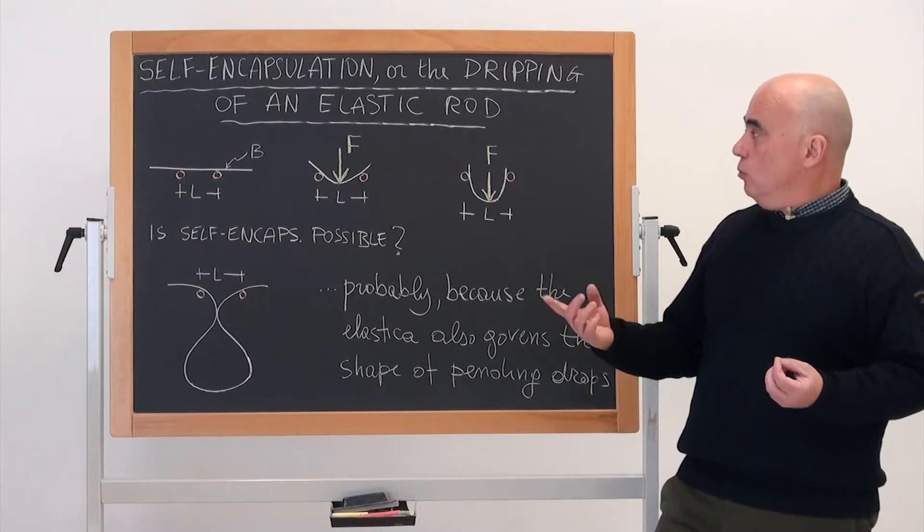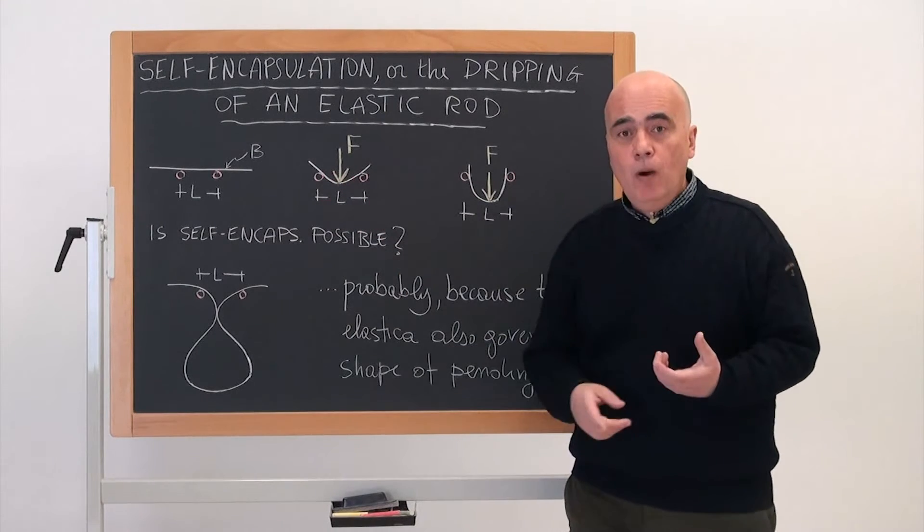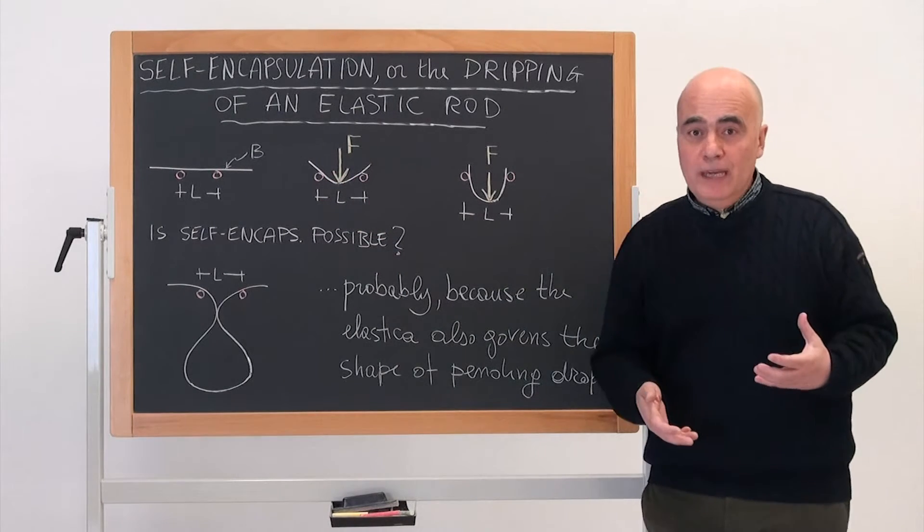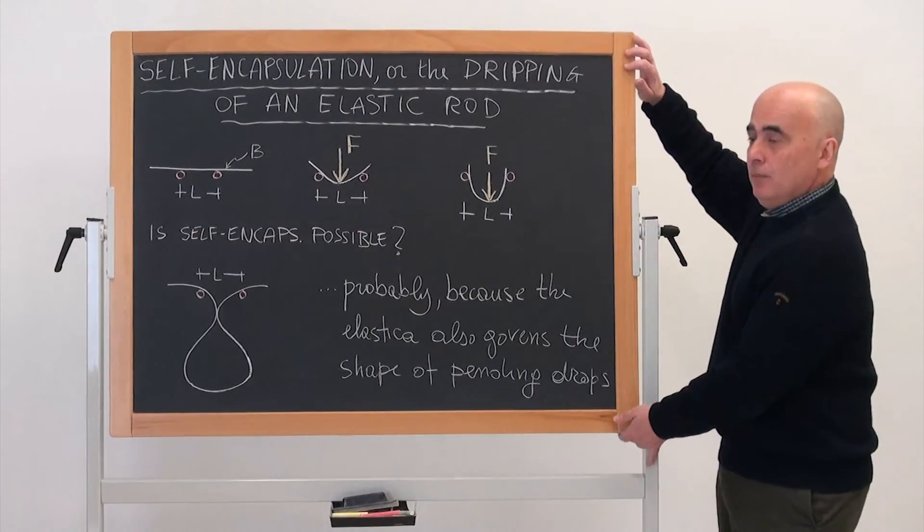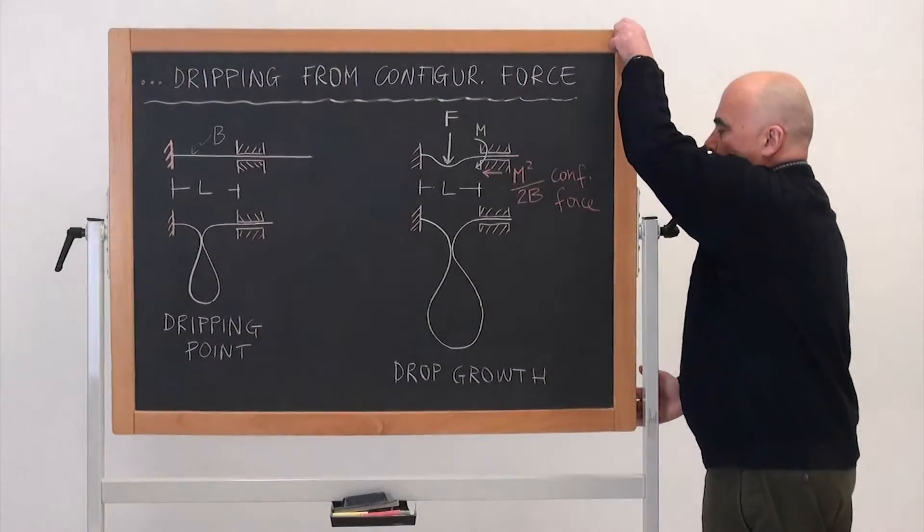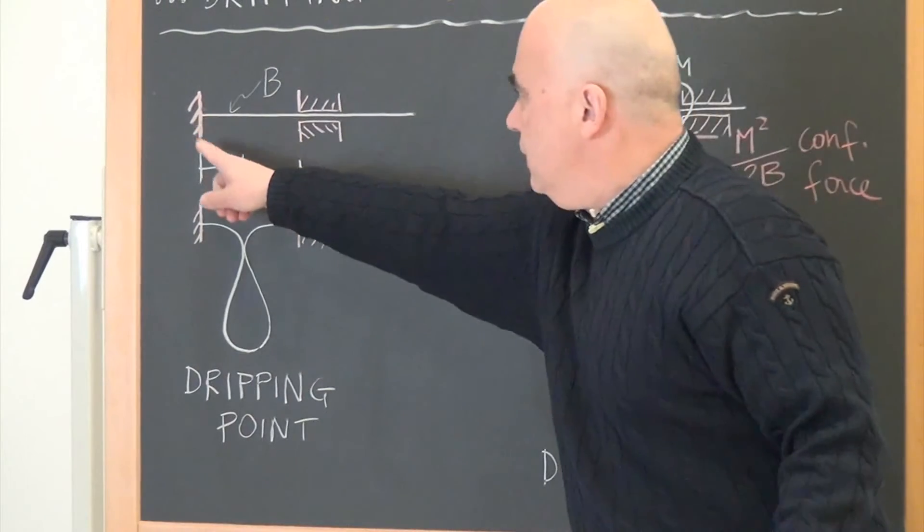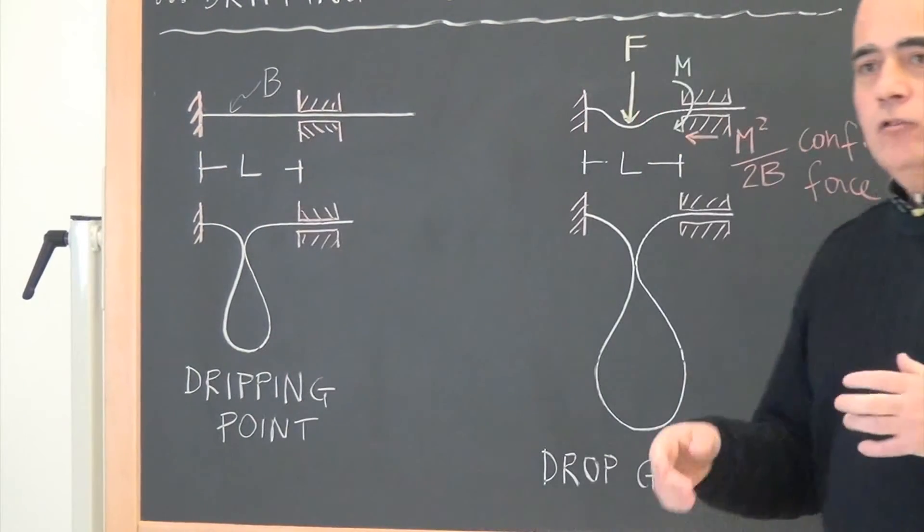The trick is to replace the simple supports with some more complicated constraints. In particular, we use a clamp on the left and a sliding sleeve on the right.